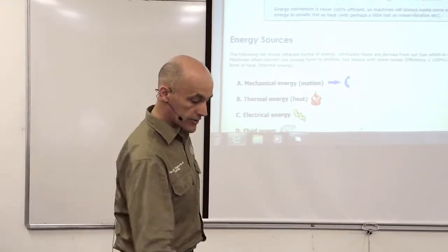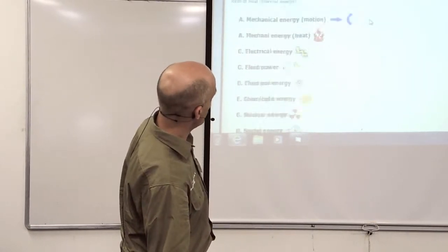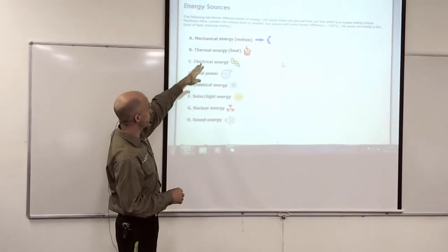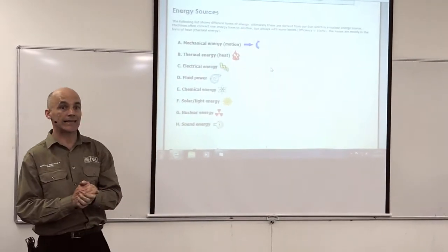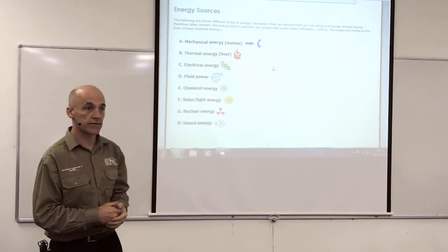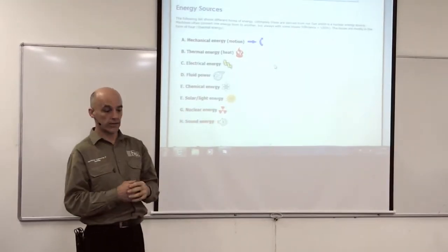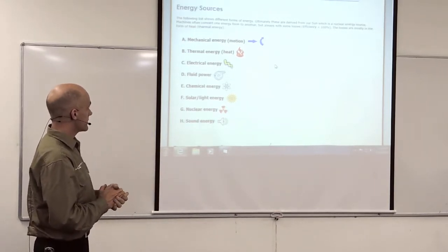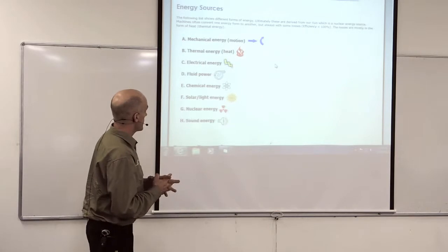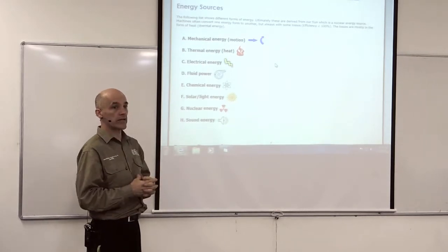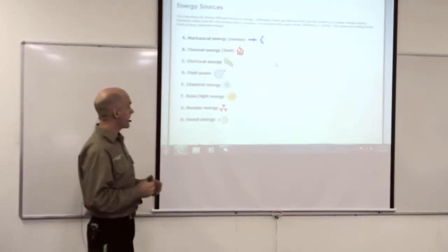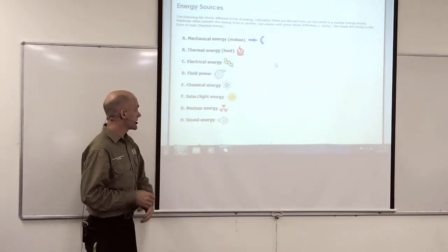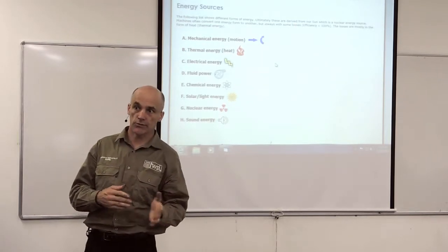The first thing we're going to look at are energy sources, where can we get energy from? Here's a list of places where energy can originate: mechanical energy, which is motion energy; thermal energy, which is energy due to heat; electrical energy; fluid power, which is another form of energy due to the fluid having pressure and velocity. There are other ones as well, like chemical energy, solar energy, nuclear energy, even sound energy.